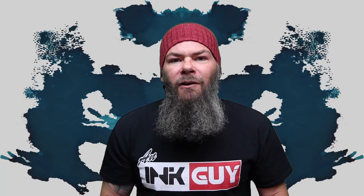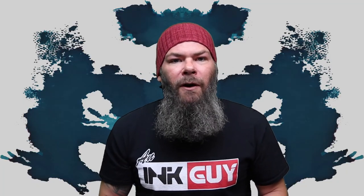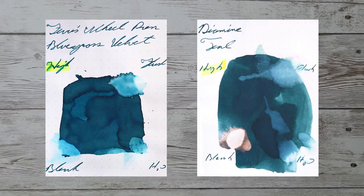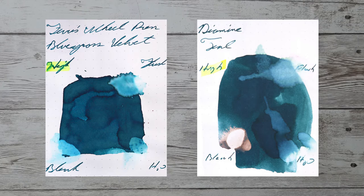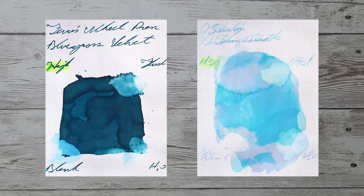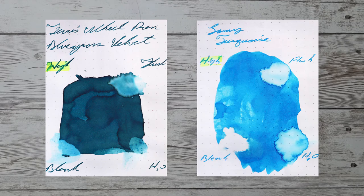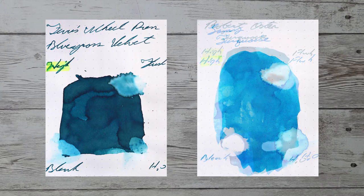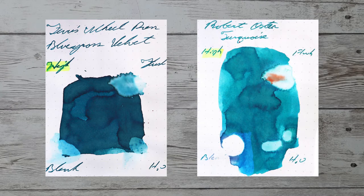With over a thousand inks reviewed, let's take a look at some color comparables. Here is Diamine Teal. Here is Jeherban Diablo Menthe. Here is Lamy Turquoise. Here is Robert Oster Turquoise.